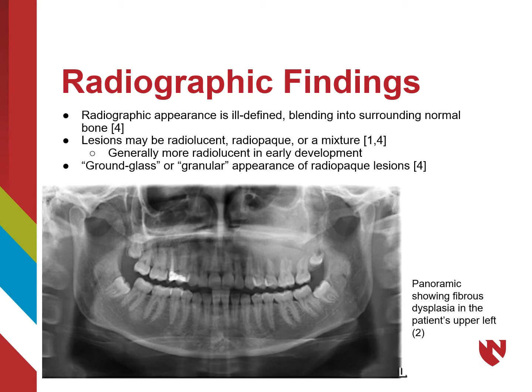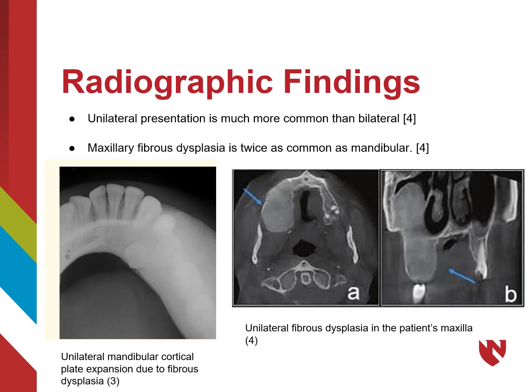The radio density changes as fibrous dysplasia matures, and in the mature stage we refer to the radiographic appearance as ground glass or granular. Ground glass is a very important term to remember as it almost exclusively refers to fibrous dysplasia. On this panoramic radiograph, we see this appearance in the patient's left maxilla. While fibrous dysplasia can appear bilaterally, it is much more common for it to appear unilaterally. We also see fibrous dysplasia in the maxilla twice as often as we see it in the mandible.